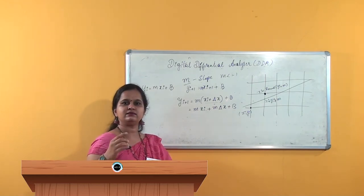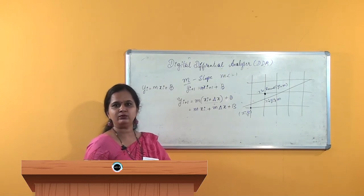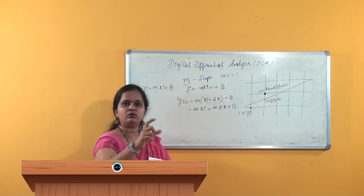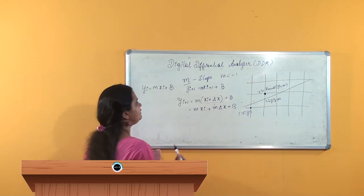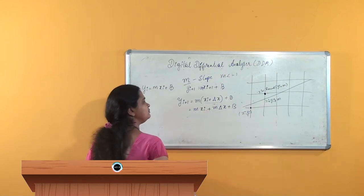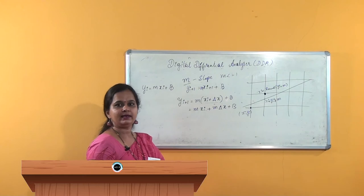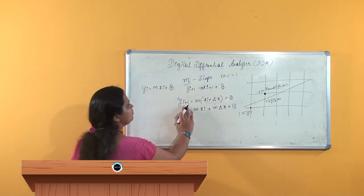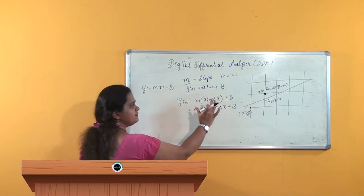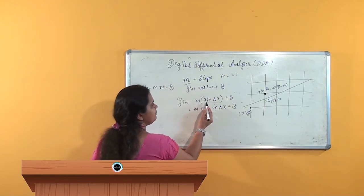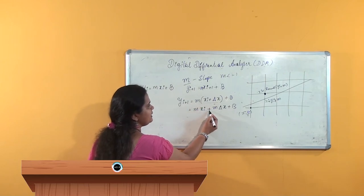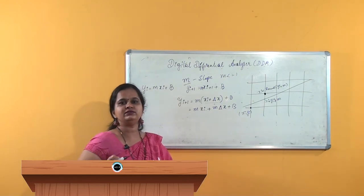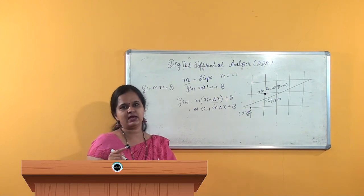The next x is x_i+1. To get x_i+1, if I was at step 1 and went to step 2 — x was 1 and now x is 2 — the change is 1. Therefore, x_i + delta x. Substituting into y = mx + b: m(x_i + delta x) + b, which expands to m*x_i + m*delta x + b. We have assumed delta x = 1 in this DDA.